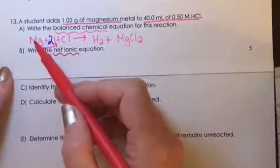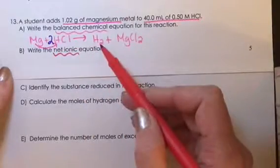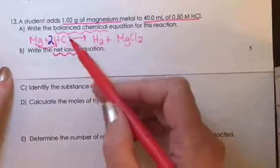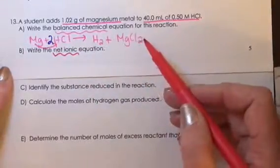The magnesium went from a neutral atom to an ion. The hydrogen went from an ion to a neutral element. But the chlorine was an ion in the acid, and then an ion in the magnesium chloride.